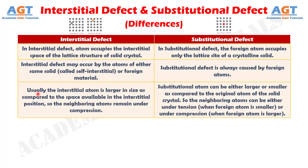Number 3. Usually the interstitial atom is larger in size compared to the space available in the interstitial position, so the neighboring atoms remain under compression. Whereas the substitutional atom can be either larger or smaller compared to the original atom of the solid crystal, so the neighboring atoms can be either under tension, when the foreign atom is smaller, or under compression, when the foreign atom is larger.